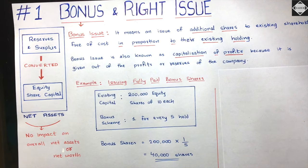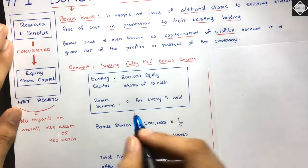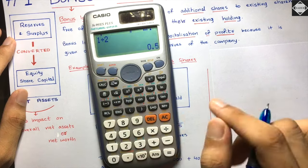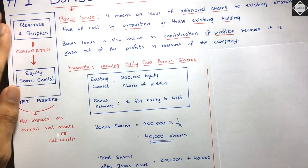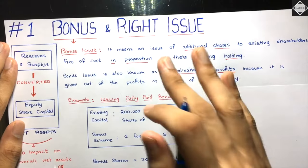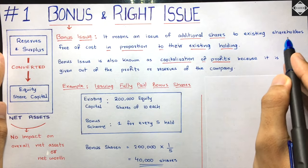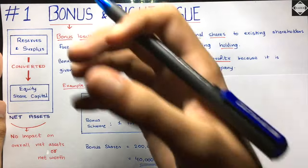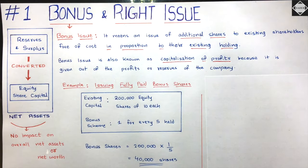There will always be a proper ratio - not random. For example, one for every five, one for every ten, one for every two. This is what issuing fully paid-up bonus shares to existing shareholders means. It's free for the shareholder - from the investor's or shareholder's point of view it is free.